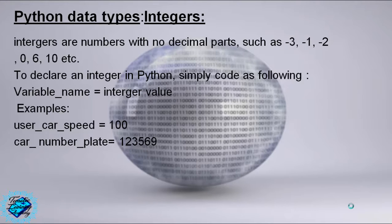To declare an integer in Python, simply code as following: variable_name = integer value.